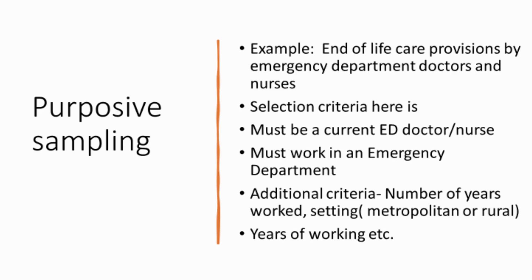For a research topic on end-of-life care provisions by emergency department doctors and nurses, the selection criteria in purposive sampling would be that participants must be current ED doctors and nurses working in an emergency department. Additional criteria could include the number of years they've worked, and the setting — whether metropolitan or rural. You can see how there's a specific set of criteria that purposively fits what the researcher is looking for.